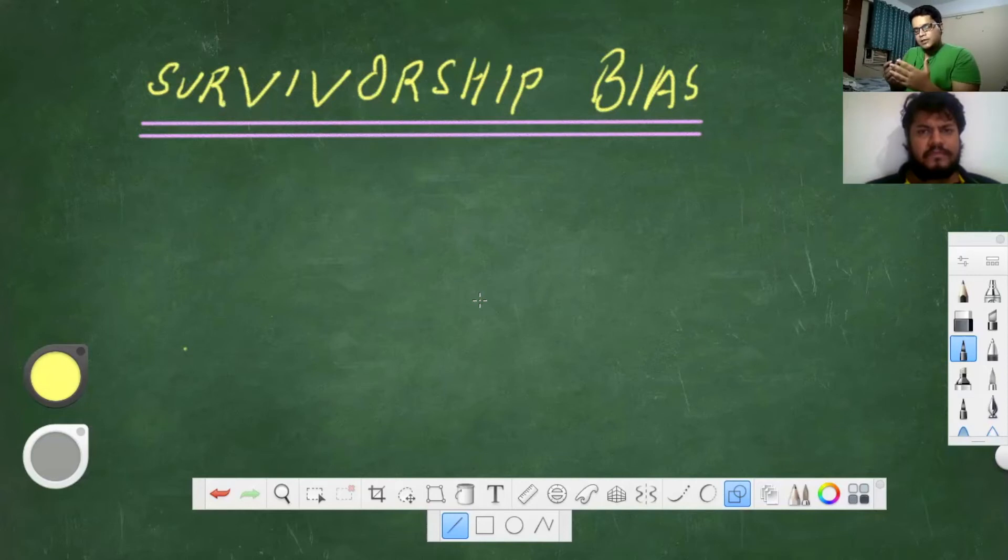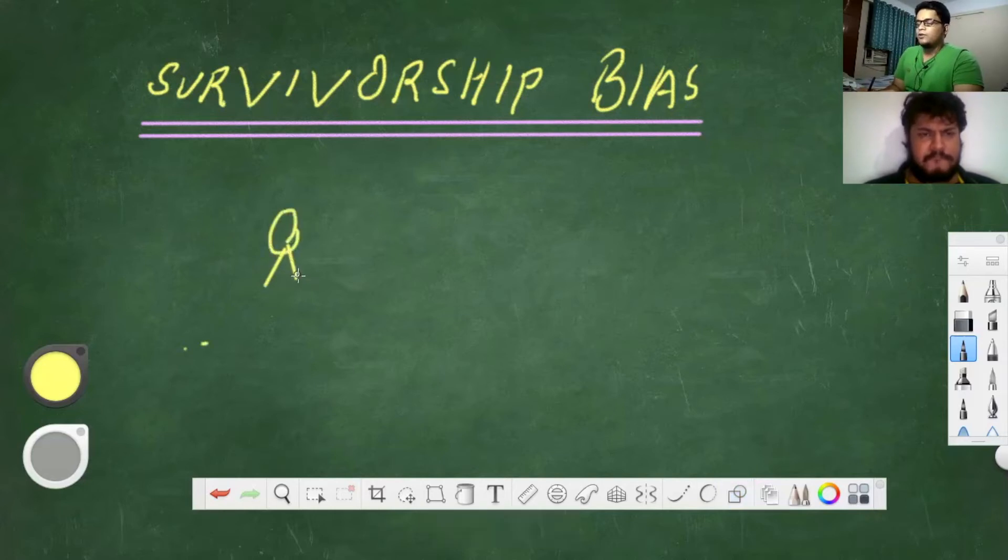So what is survivorship bias? It is actually while making a decision, we only see the successes. I'll give an example of a rock star. Let's say this person is a rock star, so you see this person on television.